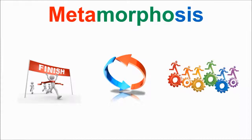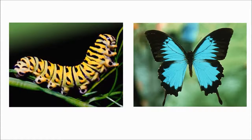Putting together what we know about 'meta,' 'morpho,' and 'sis,' we understand that metamorphosis can be thought of as a process of change that ends with a new result. Now let's apply our knowledge of the word metamorphosis to the life cycle of a butterfly.